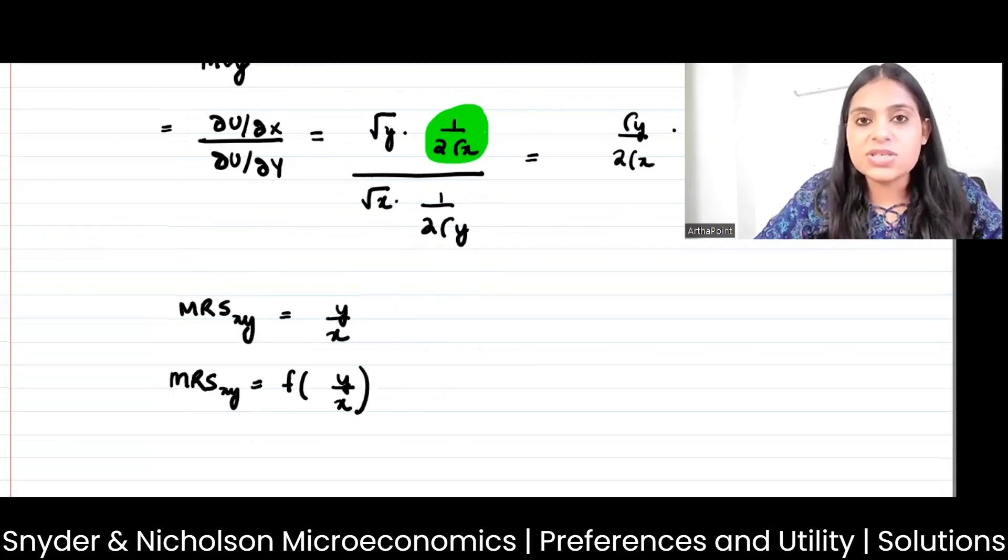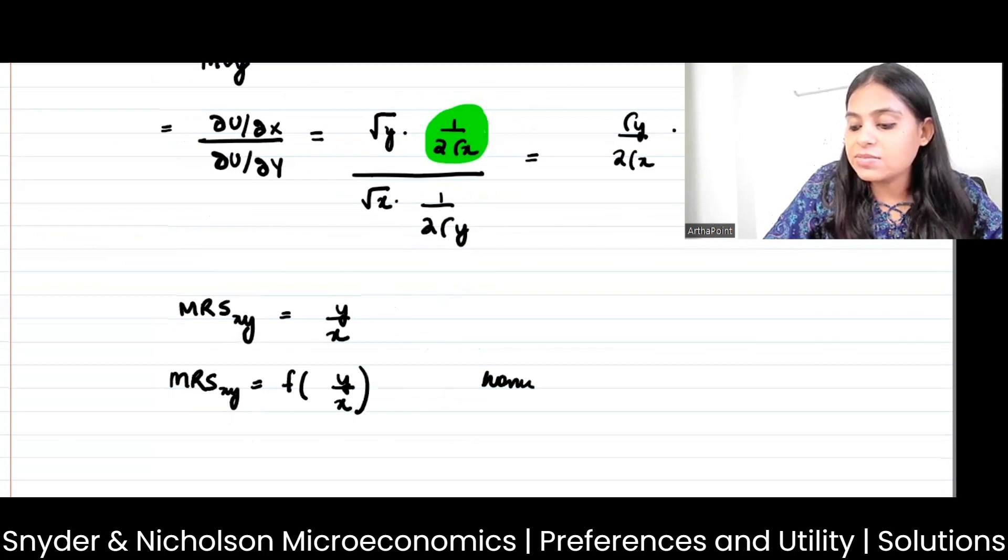When this slope is a function of the ratio of the two goods, it is called a homothetic utility function.